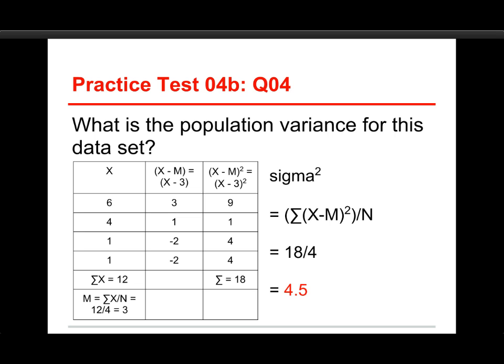Sigma squared — the population variance — is equal to the sum of squared deviations from the mean divided by the population size. In this case, that's 18 divided by 4, which gives 4.5. That is the population variance for this data set.